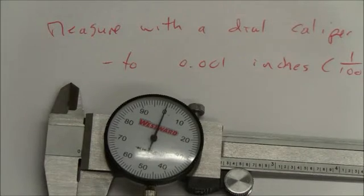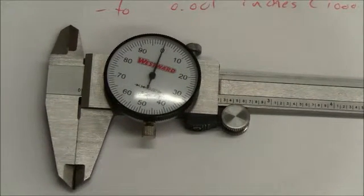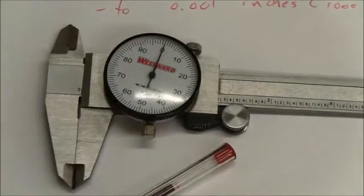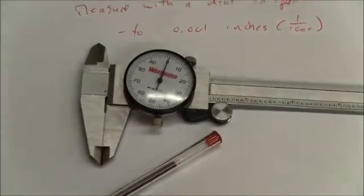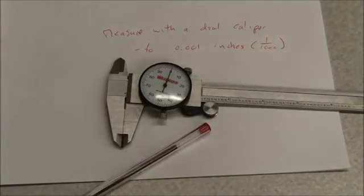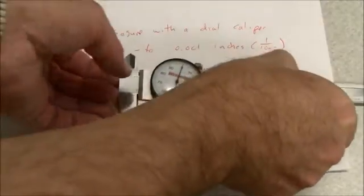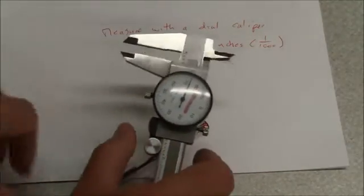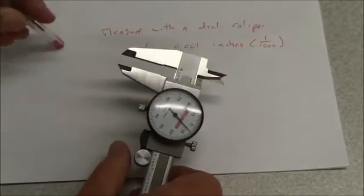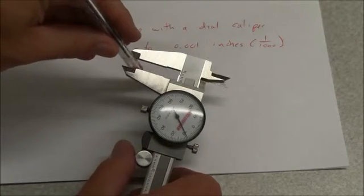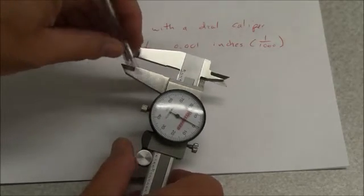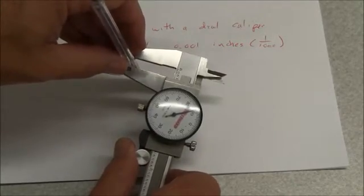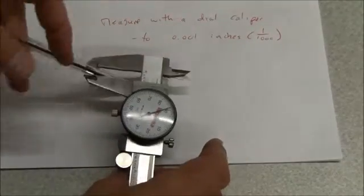What we did in class was we measured the width of a pen. So we're going to do that again. We're going to zoom that out a little so you can see. So, take the tool, open it to roughly the thickness I believe I'll need. I'll close it to the point where it feels right. There we go. Now I can read my measurement.